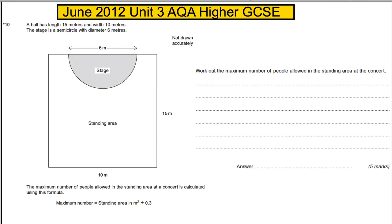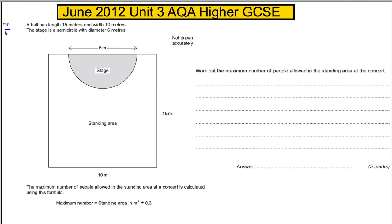This is question 10 — it has a star on it, meaning you have to lay your work out neatly. We are told a hall has a length of 15 meters and a width of 10 meters. The stage is a semicircle with diameter 6 meters, so the radius is therefore 3 meters.